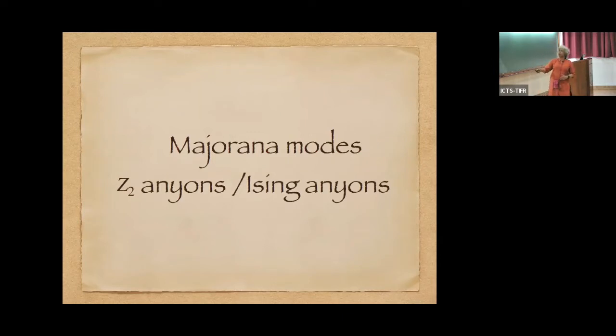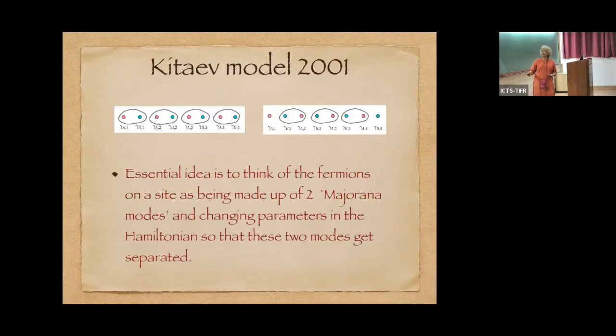let me now go to what is the simplest kind of non-abelian anyons that you might have heard about, which are the Majorana modes. This is also often called Ising anyons, like the Ising model of non-abelian particles, or Z2 anyons. And the simplest model of such anyons was first proposed by Kitaev in 2001.